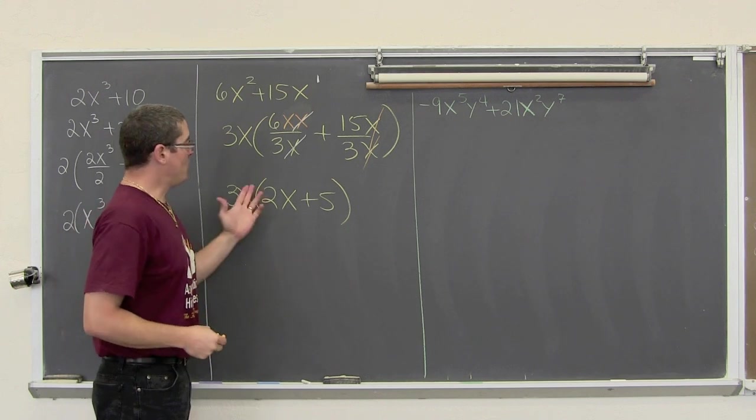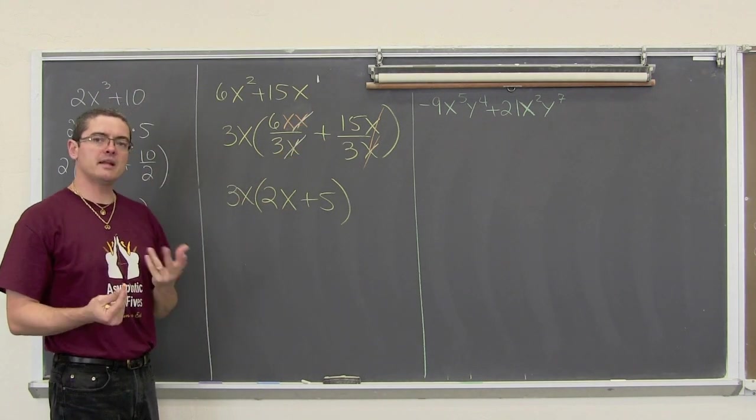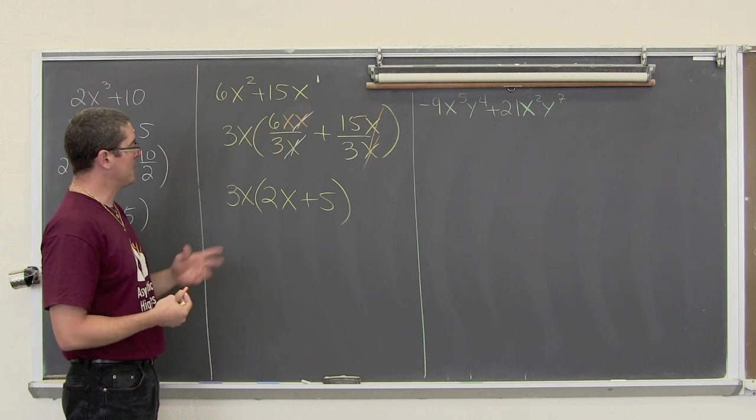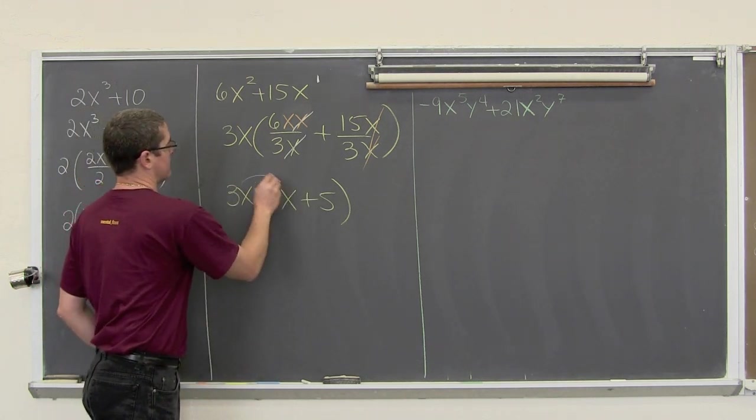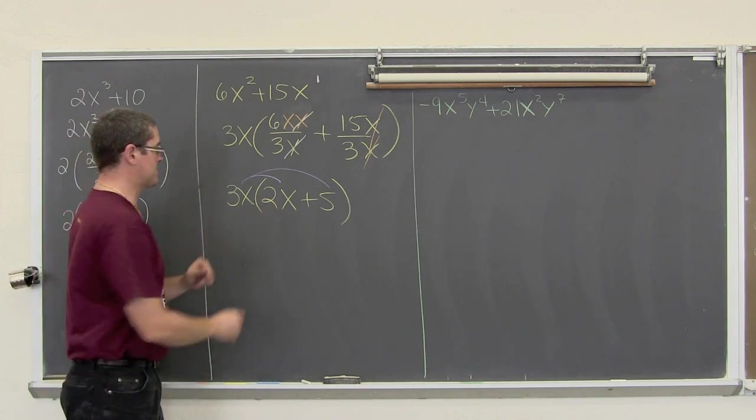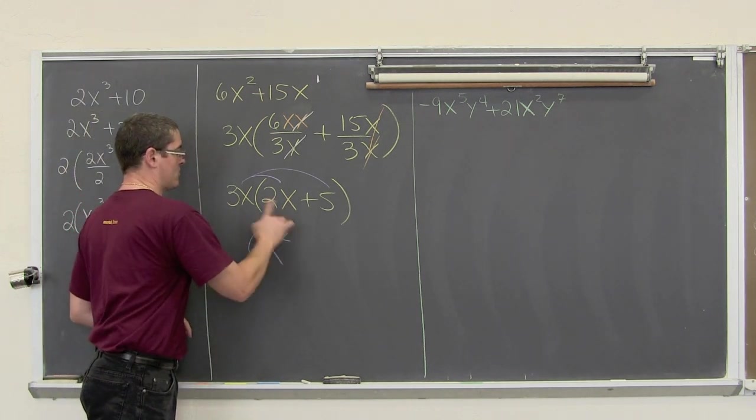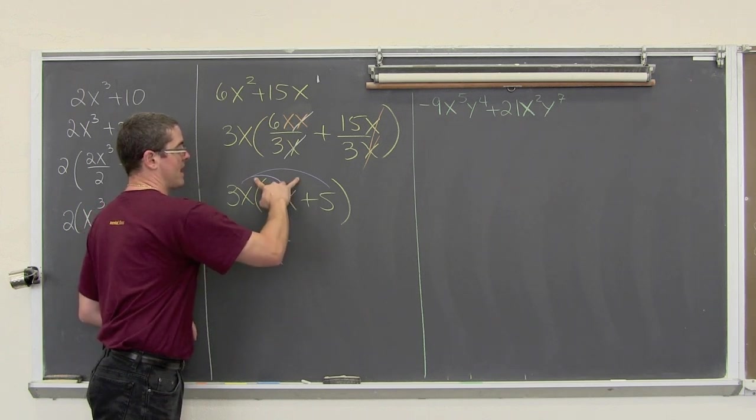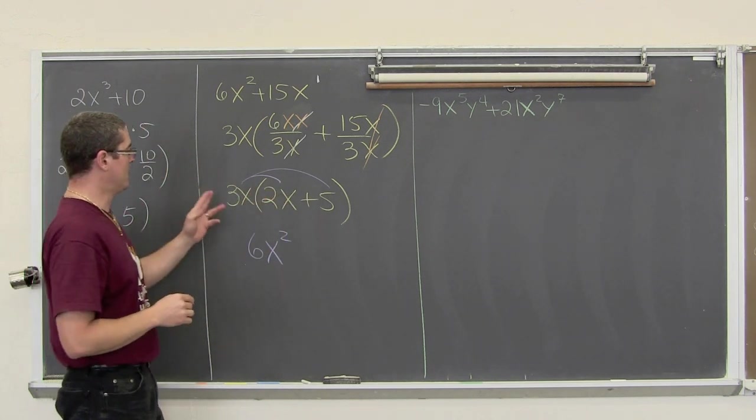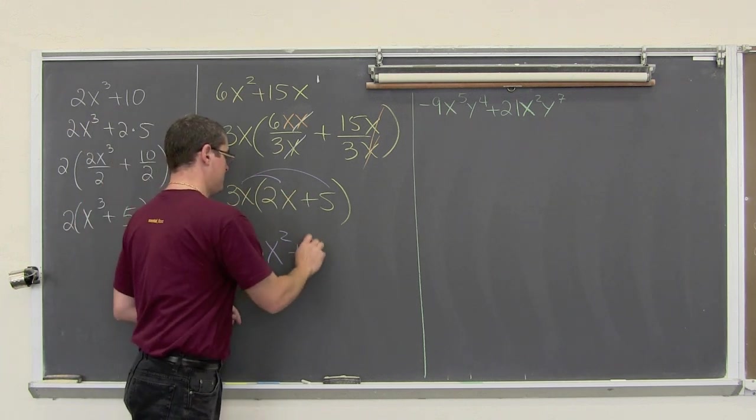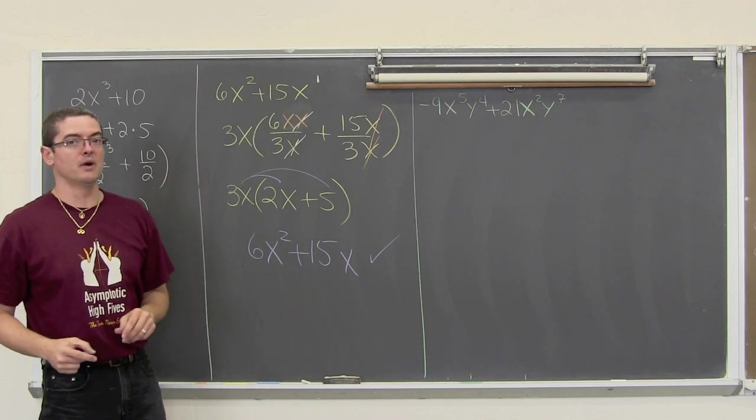So, here we go. If you want to check this answer, like maybe you haven't dealt with dividing exponents very much yet, and you want to check your work, you can always just take this and multiply it back through, and make sure that it matches. 3 times 2 is equal to 6. x times x is equal to x squared. Remember when you multiply those like bases, you add the exponents, and there is little unseen exponents of 1 there. Then, 3x times 5 is equal to 15x, and indeed, that is what we started off with.